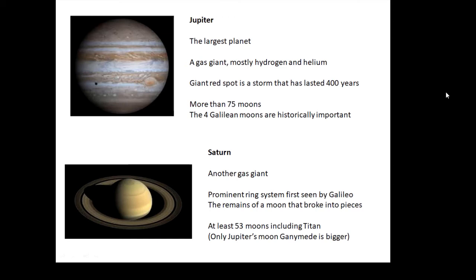It's a storm in all of these gases whizzing round that's been going on for about 400 years now. It has lots of moons, more than 75. The four Galilean moons are historically important—the four moons that Galileo saw with his telescope.